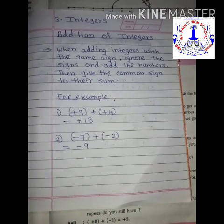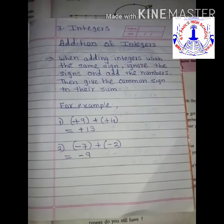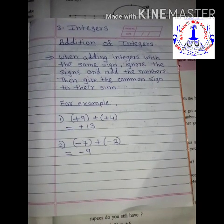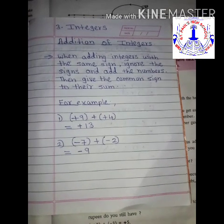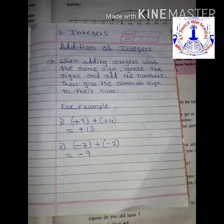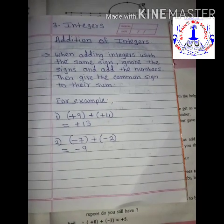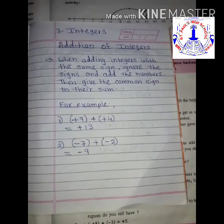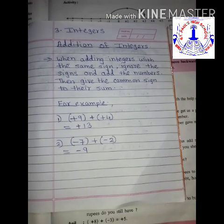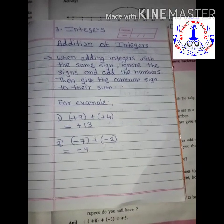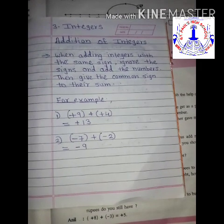We are going to start with the addition of integers. In the addition of integers, there are two rules. The first rule is: when adding integers with the same sign, ignore the signs and add the numbers, then give the common sign to their sum. Whenever two integers have the same sign and you have to add them, first add the numbers and then give the common sign.